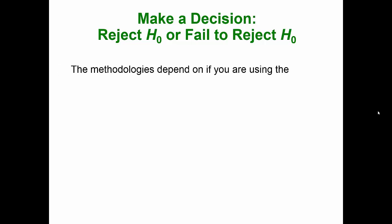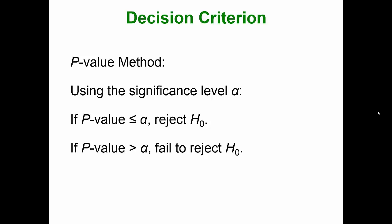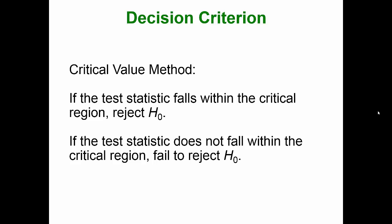The methodologies depend on if you are using the p-value method or the critical value method. With the p-value method, we use the significance level alpha: if the p-value is less than or equal to alpha, we decide to reject the null; if the p-value is greater than alpha, we fail to reject the null. With the critical value method, if the test statistic falls within the critical region of the tail, we reject the null; if it does not fall within the critical region, we fail to reject the null.